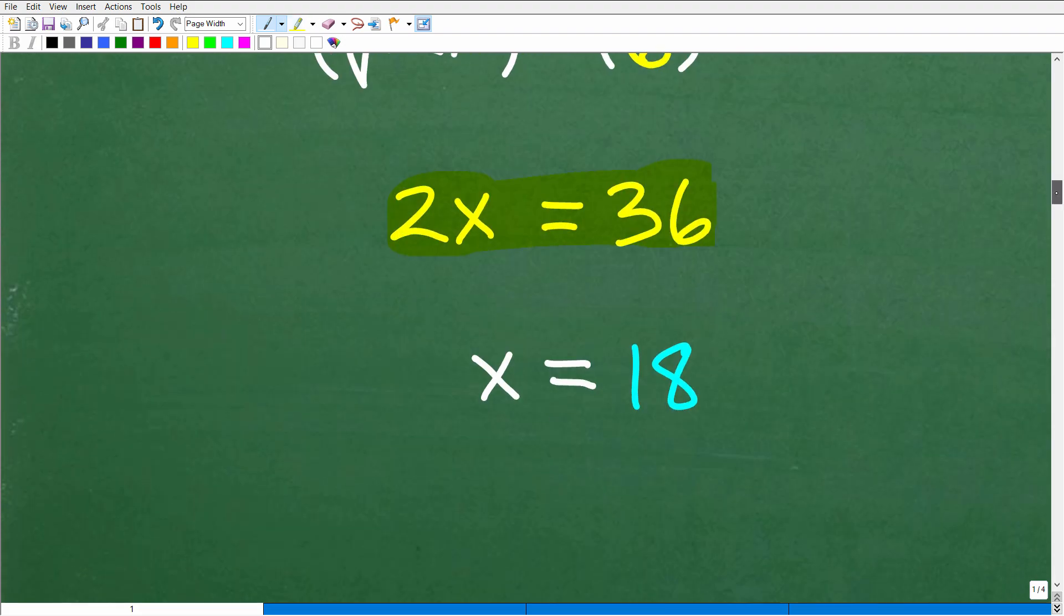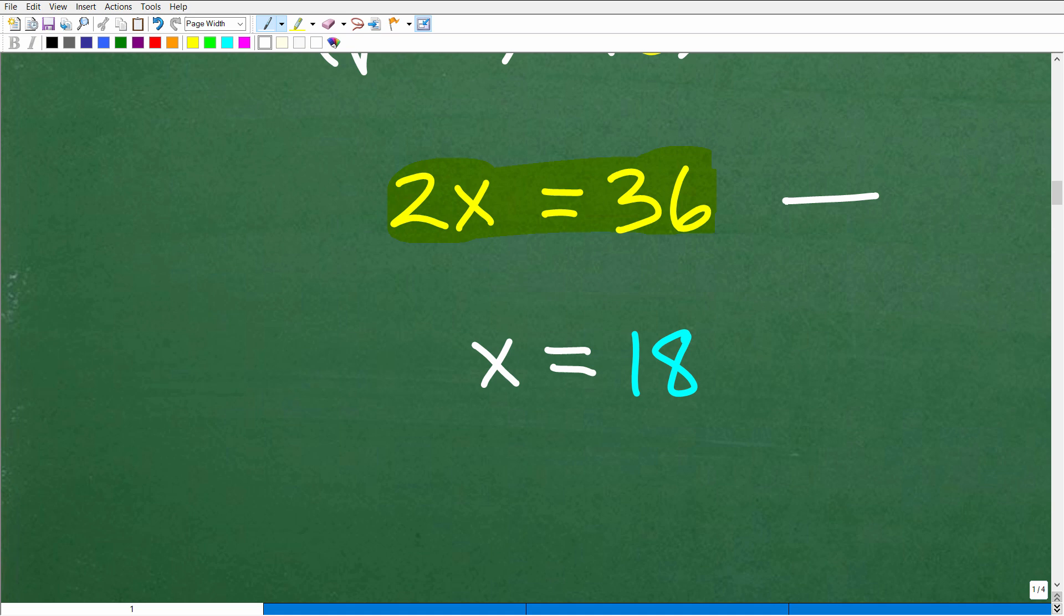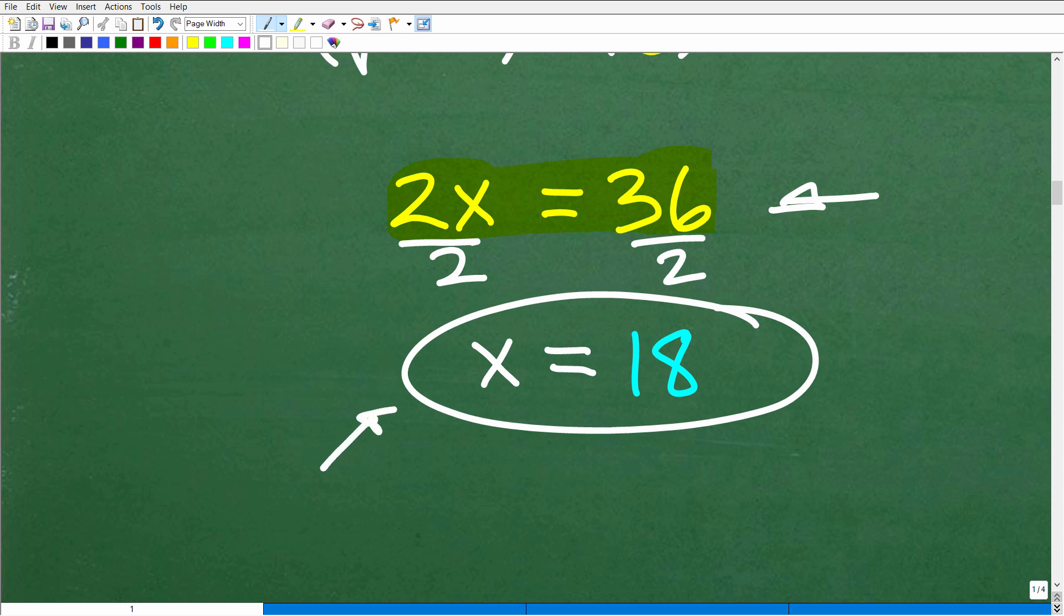Okay, so pretty simple step remaining. We're down to a one-step equation, 2x equals 36. To solve for x, all we have to do is divide both sides by 2, and x equals 18.